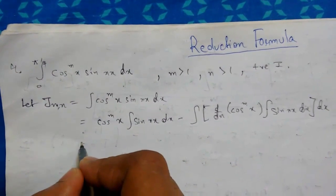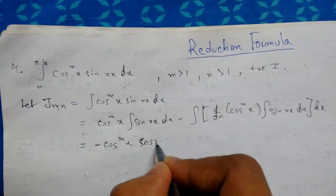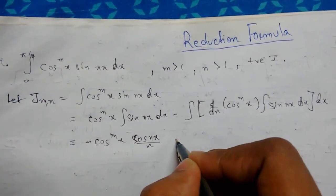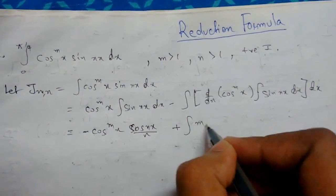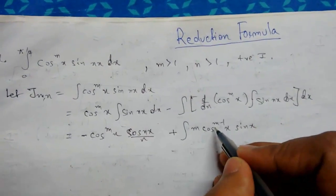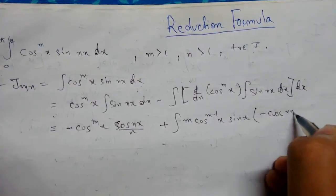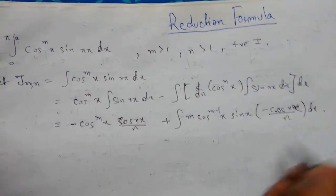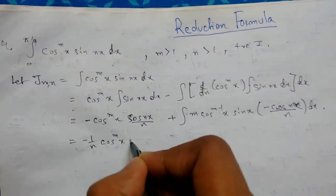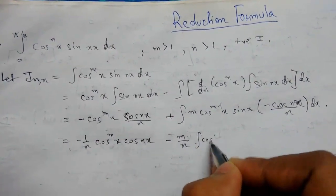This turns out to be: minus cos^m(x) · cos(nx)/n, evaluated, plus m·cos^(m-1)(x)·sin(x), and the integration of cos(nx) becomes minus cos(nx)/n dx. So this gives minus (1/n)·cos^m(x)·cos(nx), and then minus m/n goes outside with cos^(m-1)(x).